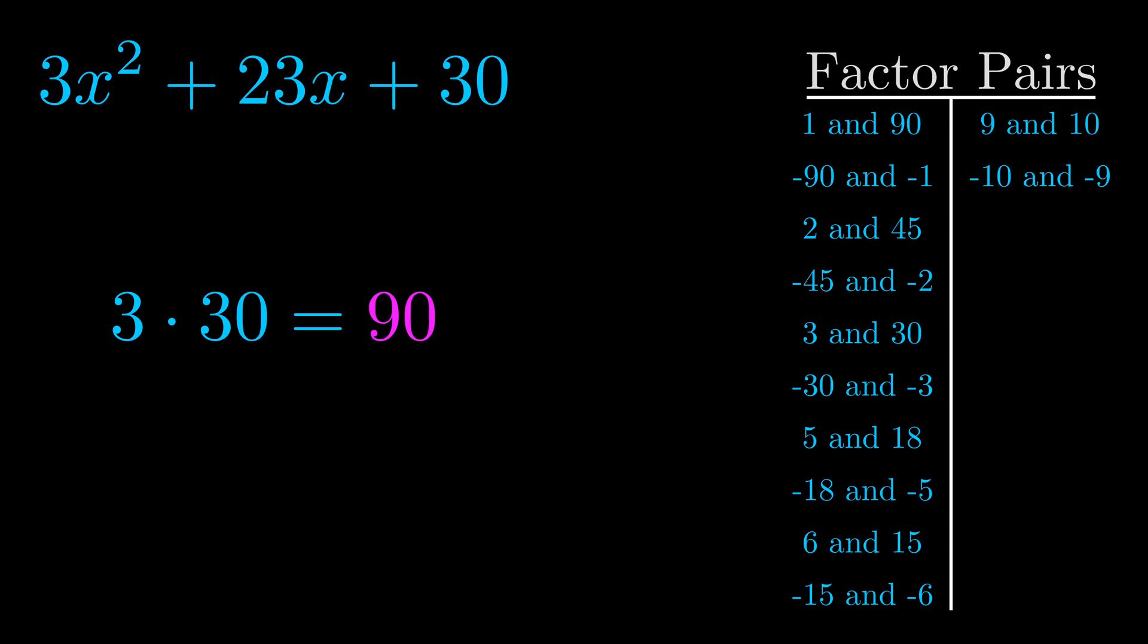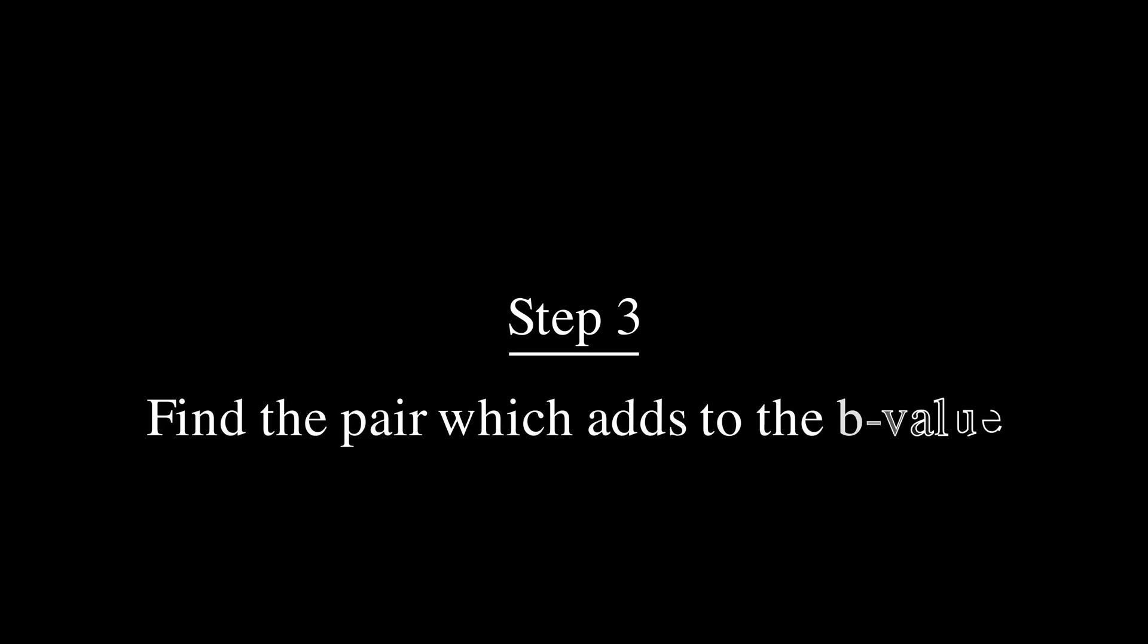Once you have these factor pairs, the goal is to find which of these pairs adds to the b value. The b value is the coefficient on the x term.